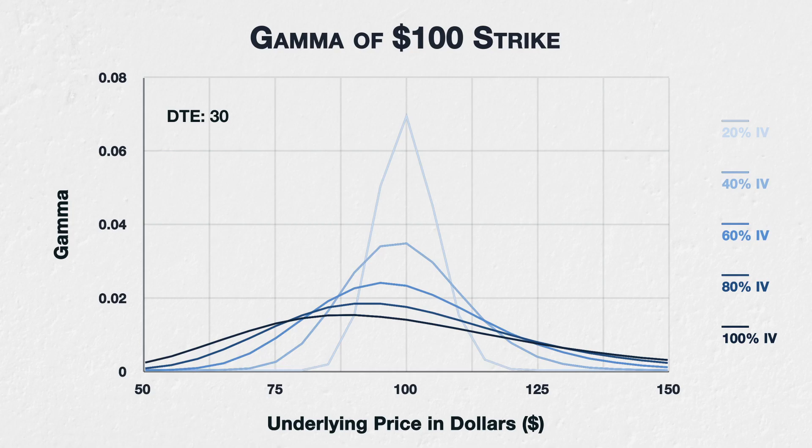As we increase implied volatility we see a few things happening. The gamma for this option peaks at a lower underlying price as we increase the implied volatility. The fall off is also slower, with gamma being increased when the strike price is further away from the underlying price. The higher the implied volatility, the flatter the curve, and the further away from the strike price the underlying price can be while we retain some gamma.